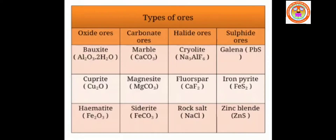Coming to the next type — carbonate ores. Examples are marble, magnesite, and siderite. Marble has the molecular formula CaCO₃ — calcium carbonate. Magnesite is magnesium carbonate, MgCO₃. Siderite is iron carbonate, FeCO₃, and is an ore of the metal iron. In carbonate ores, the metals to be extracted are present in their carbonate forms. Calcium is present as CaCO₃, magnesium as MgCO₃, and iron as FeCO₃, so they come under the category of carbonate ores.